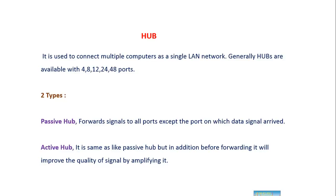There are two types of hubs: passive hub and active hub. In a passive hub, for example, if there's an 8-port hub and a data signal is received from port 1, then the same signal will be broadcasted or forwarded to all the remaining 7 ports — that is, to all ports except the port on which the data signal arrived.